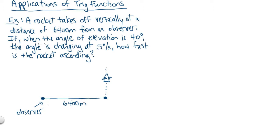We want to know when the angle of elevation is 40 degrees. Let's draw on the angle of elevation — that would be measured from the ground, and we're looking at the sight line from the observer up to the rocket. There's our angle of elevation. Let's call it theta. So if when theta is 40 degrees, theta is changing at a specific rate, we want to know how fast is the rocket ascending.